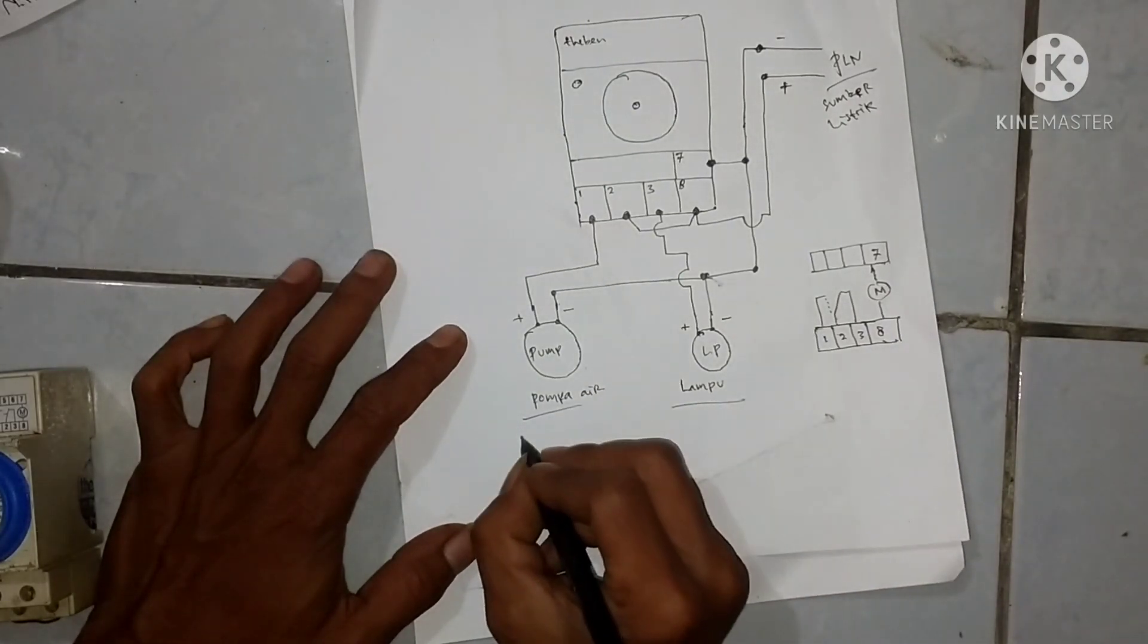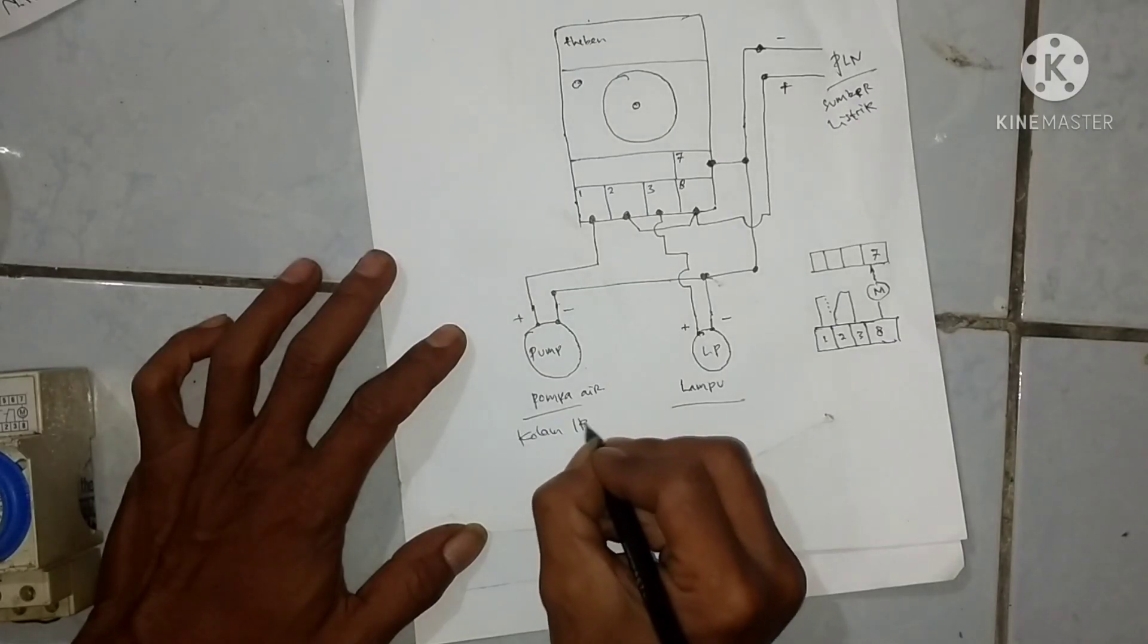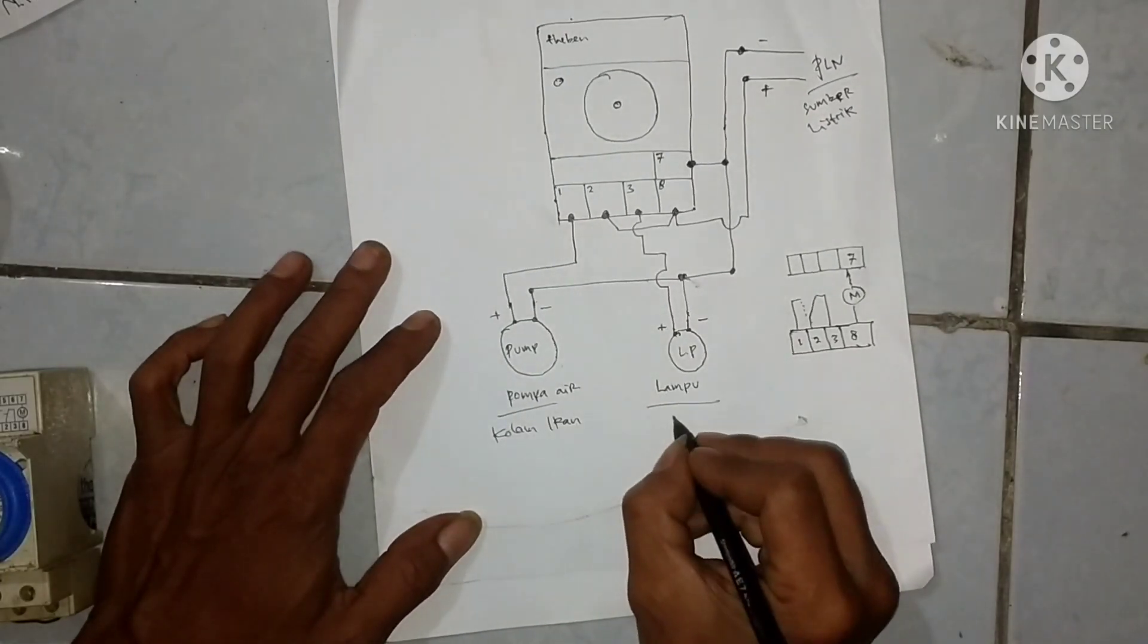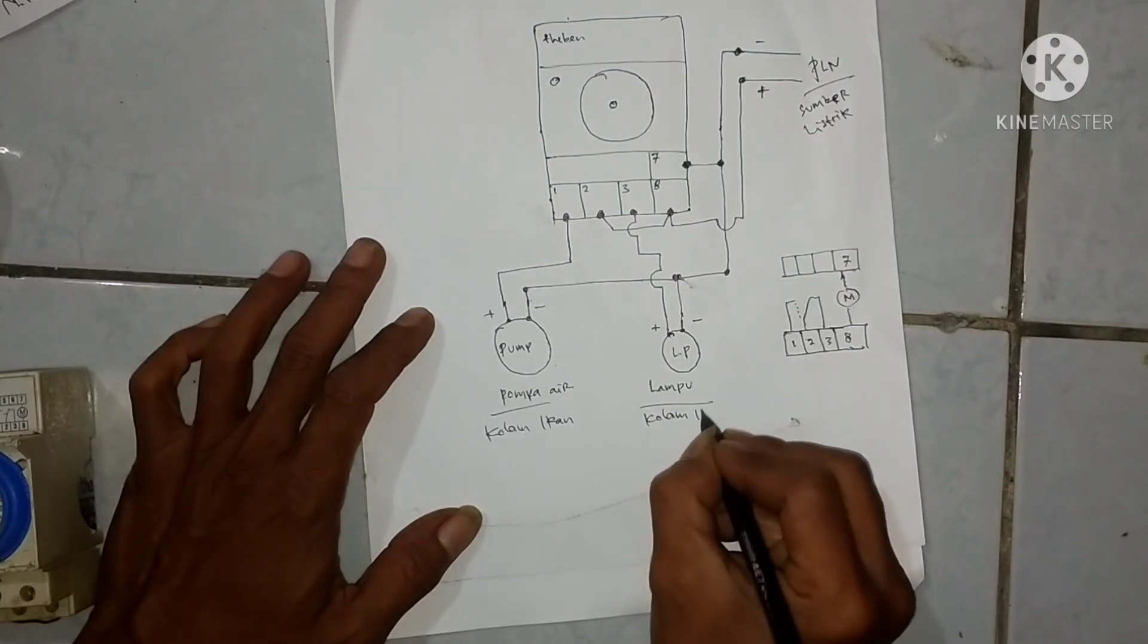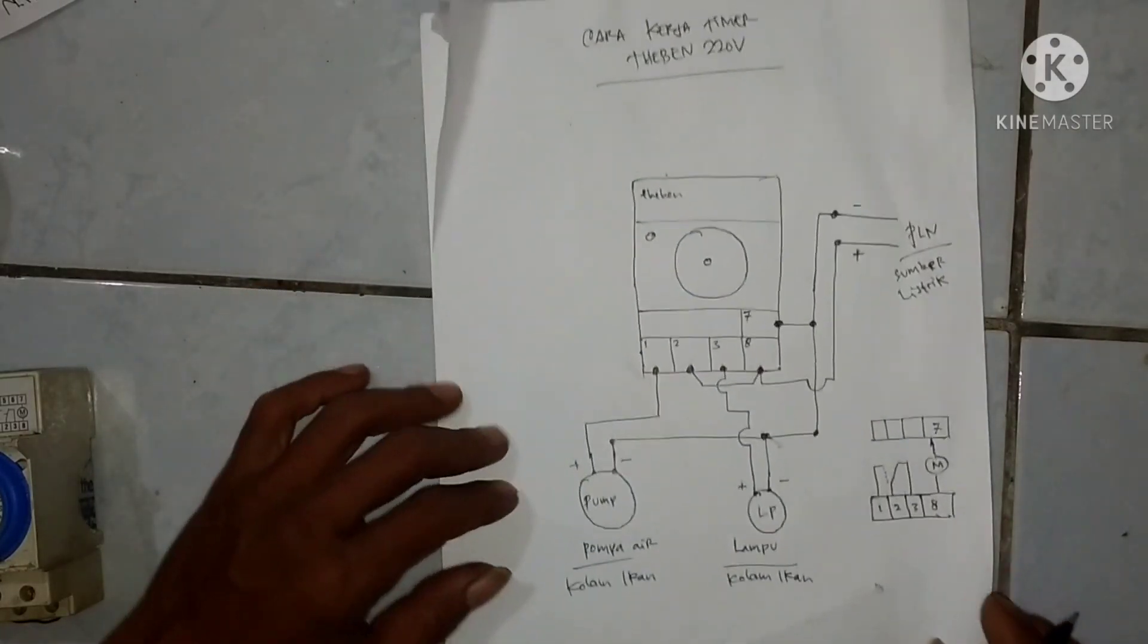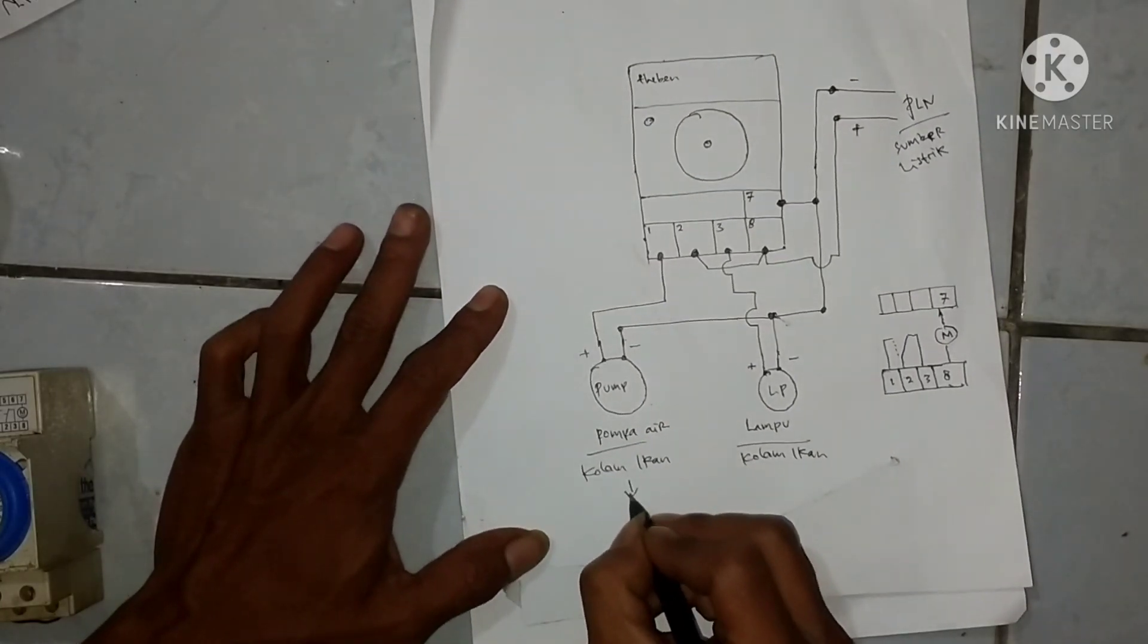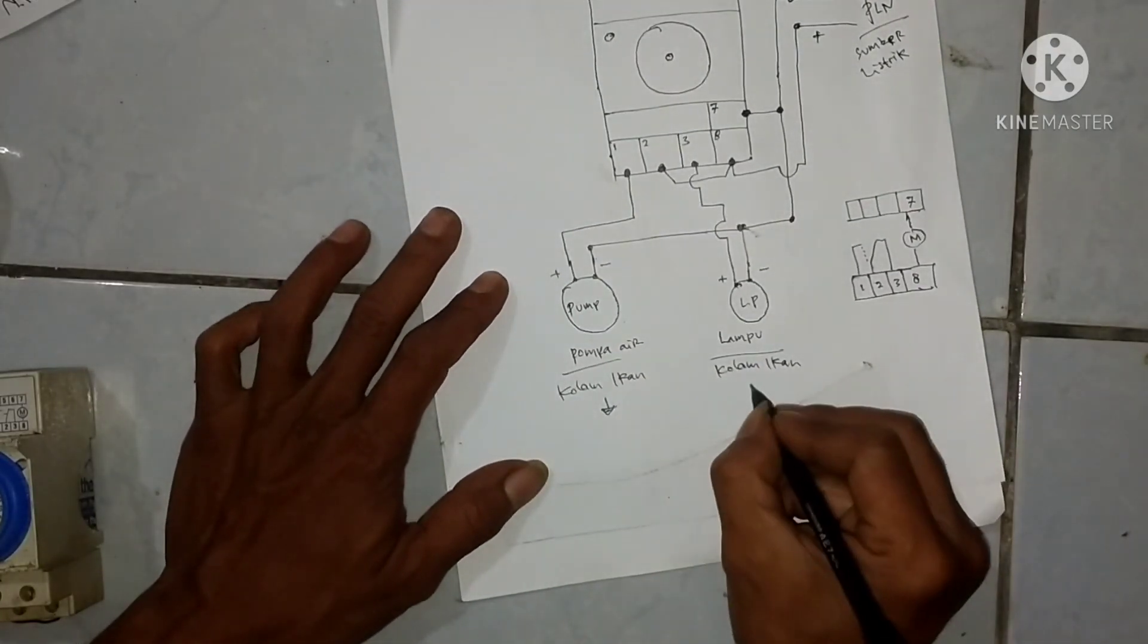Misalkan si pompa ini butuh waktu jam 6 pagi sampai jam 6 sore. Si lampunya sebaliknya, jam 6 sore sampai jam 6 pagi.